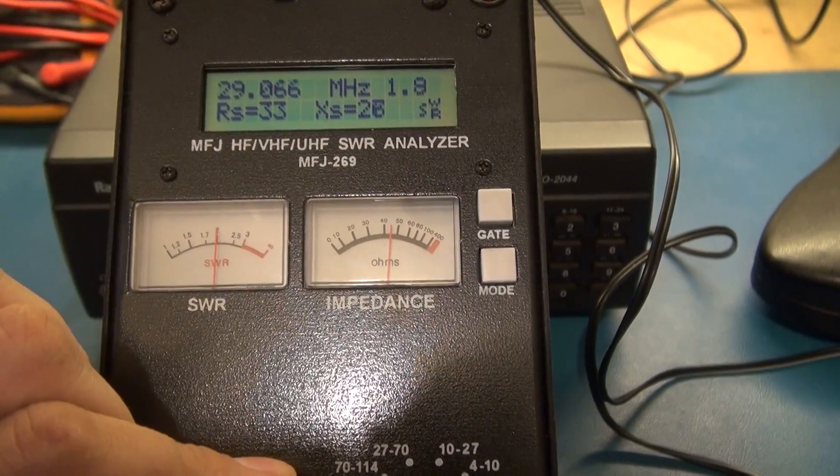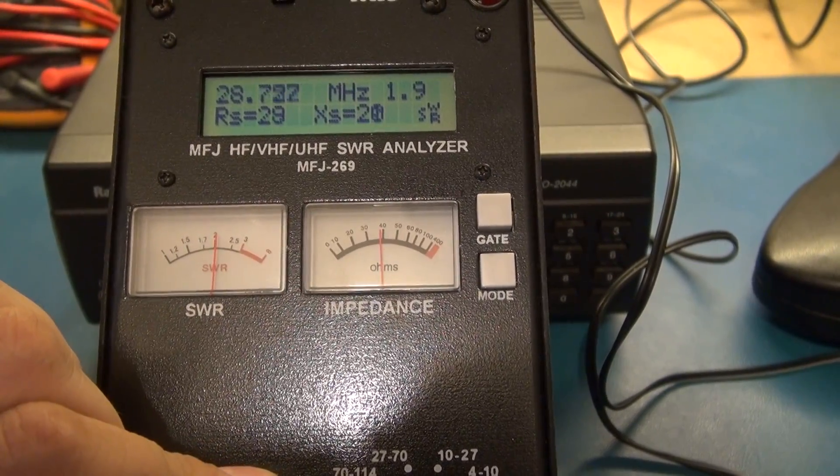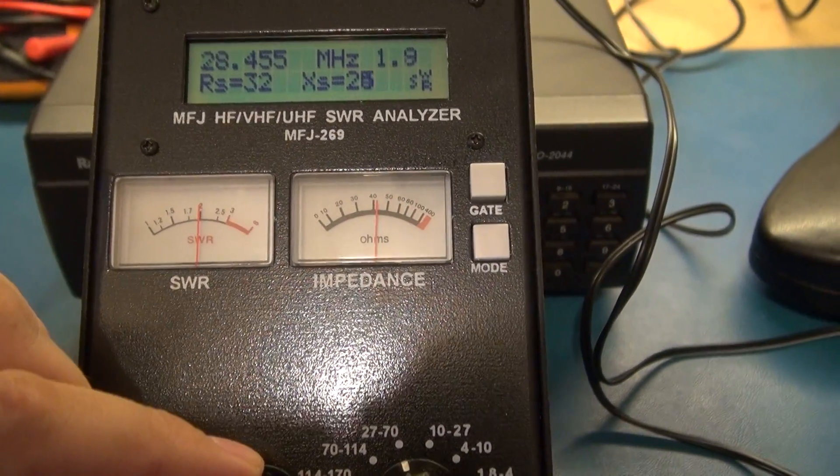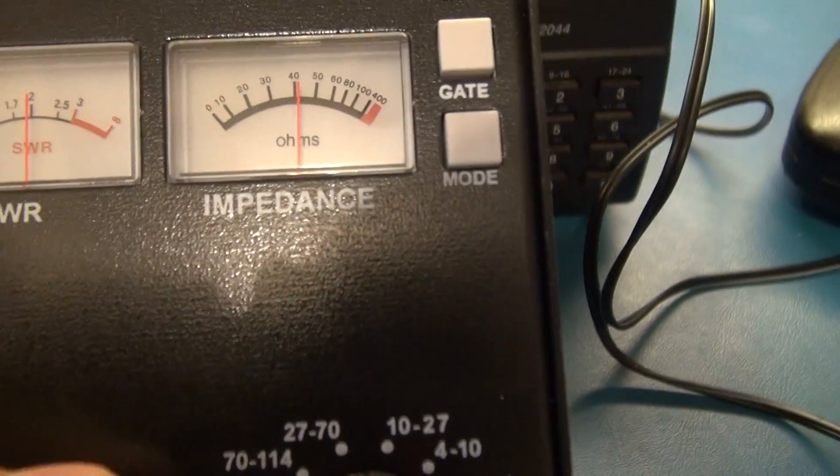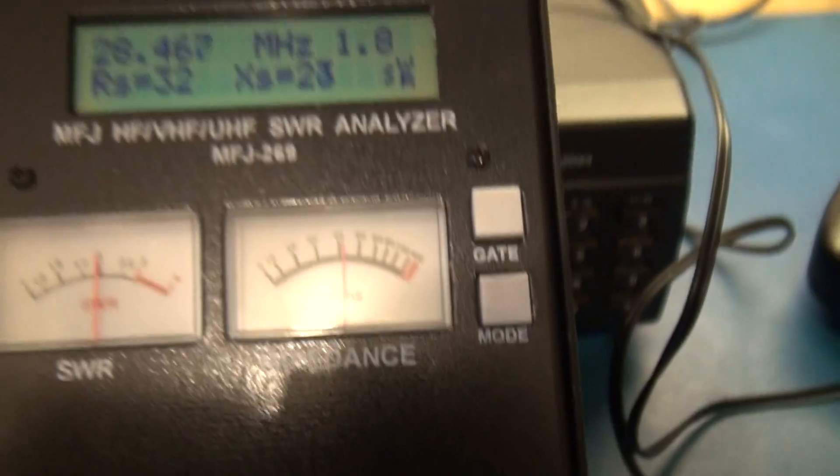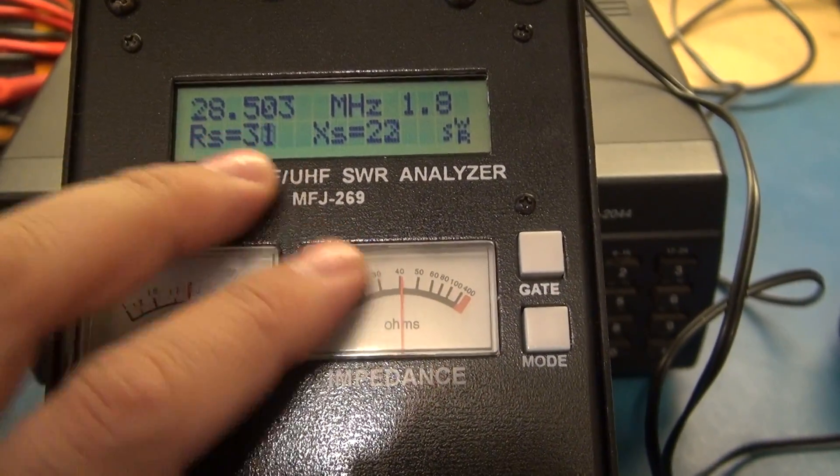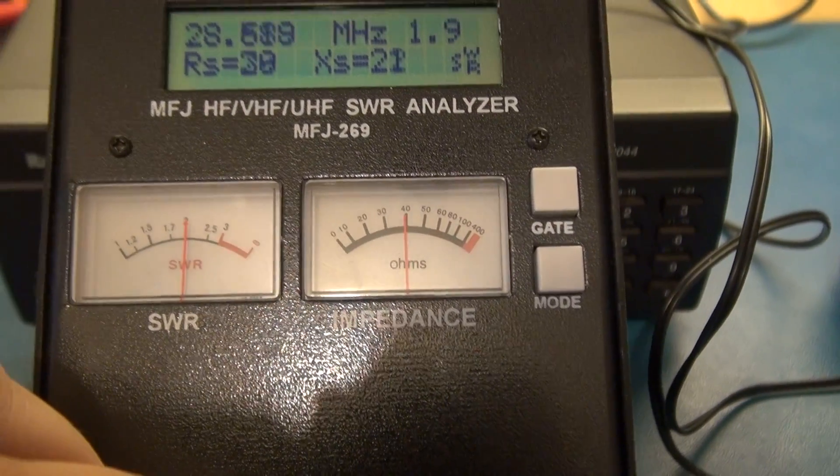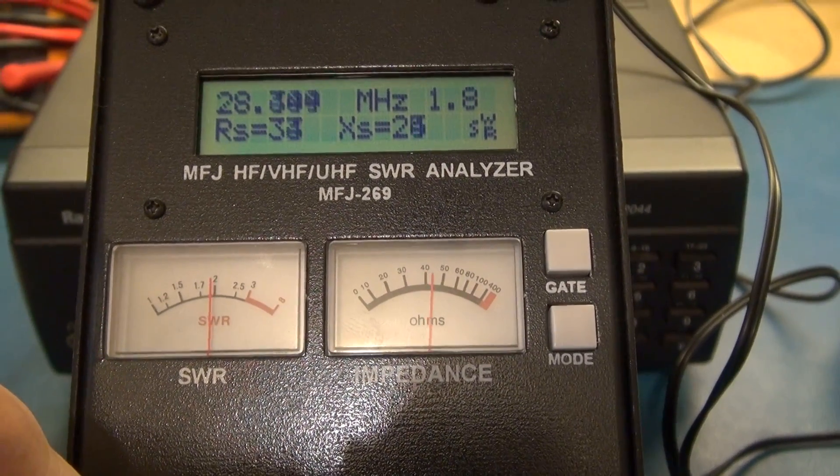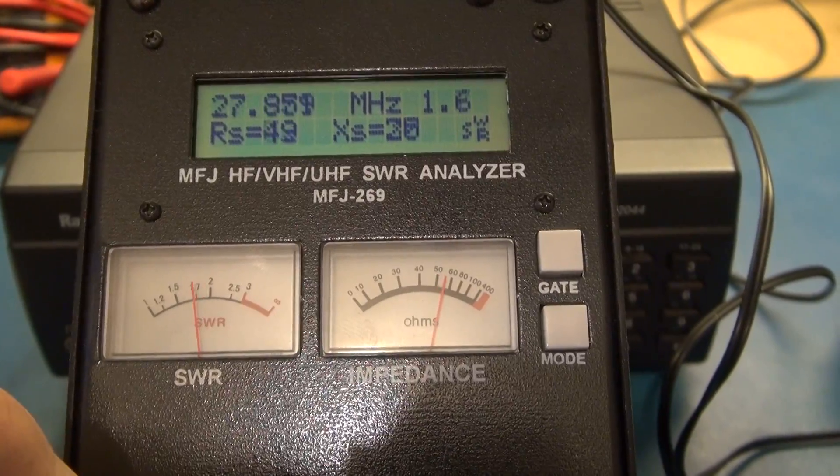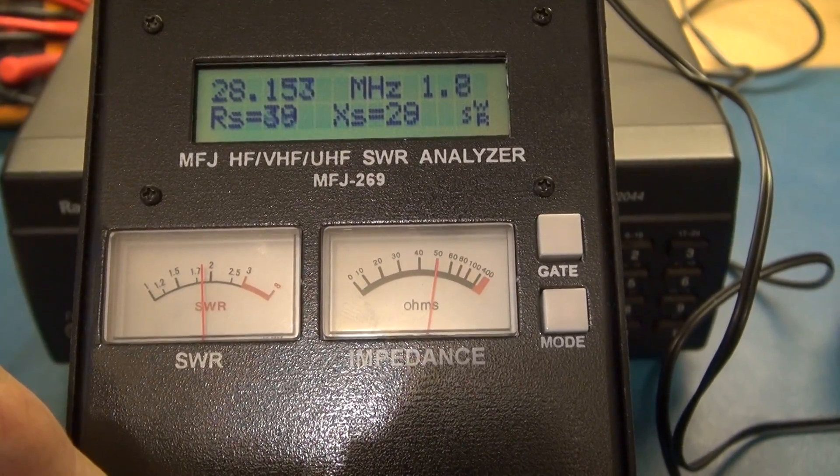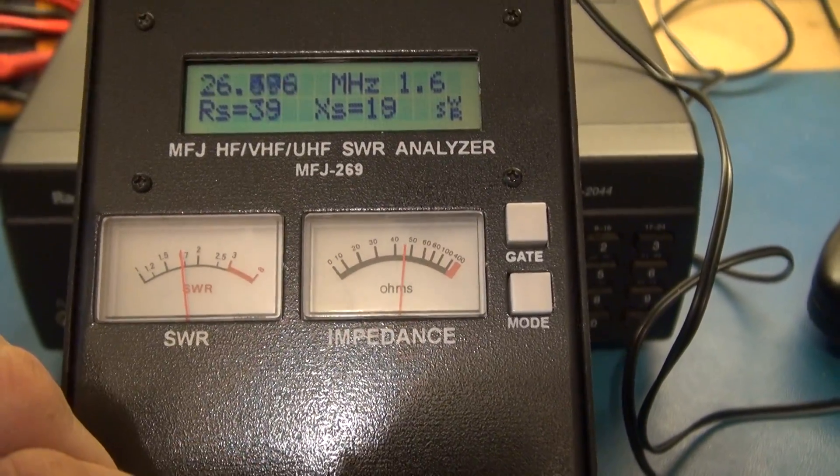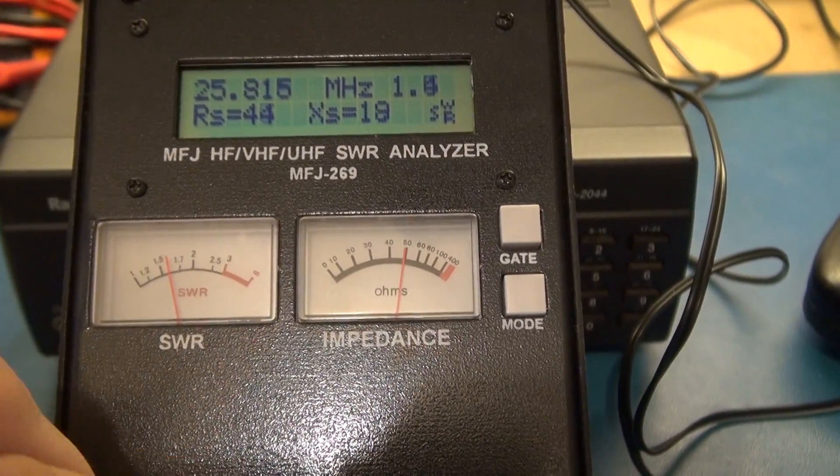There we go. She tunes there. And it's not a bad match. 50 ohms. 40 ohms. Yeah, a little inconsistency here with the meter versus the LCD. Let's bring it up to here. But still, fully tunable. I mean, these antennas are meant to be hooked up to a tuner.